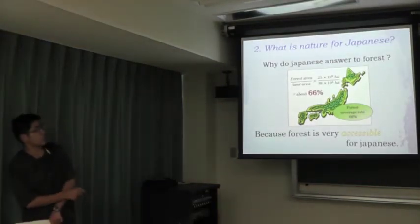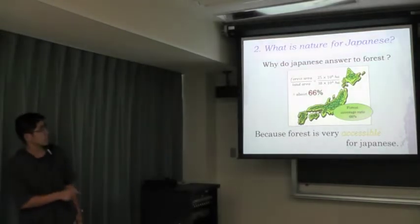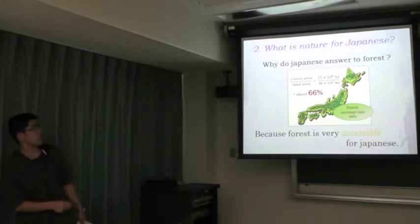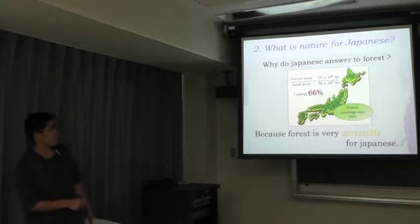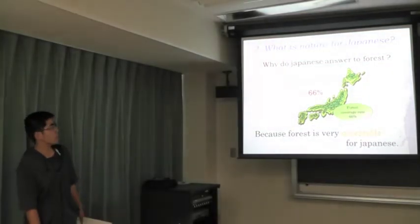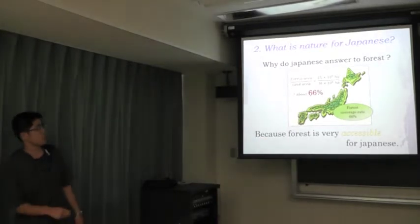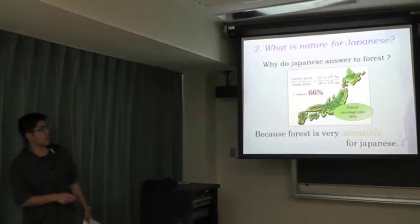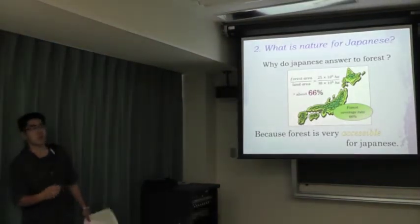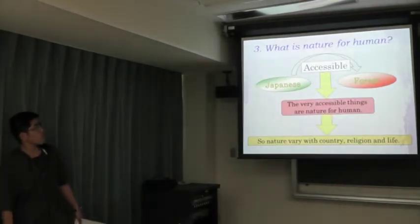And next, why do Japanese people answer forest? This is a Japanese map. Look at this data. This data is forest area divided by land area. About 66% of Japan's area is covered by forest, so forest is very accessible for Japanese people.